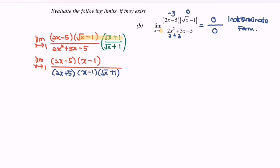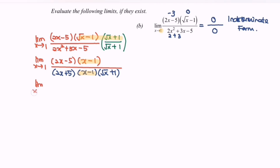Notice that we have the common factor (x - 1) in both the numerator and denominator. So we can cancel it, simplifying the expression to the limit as x approaches 1 of (2x - 5) over (2x + 5)(√x + 1).